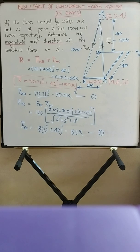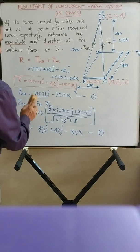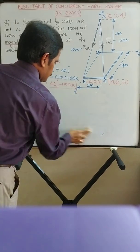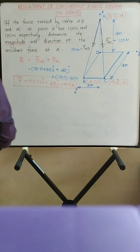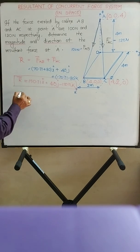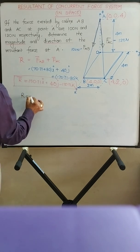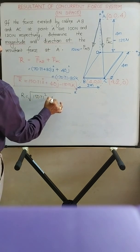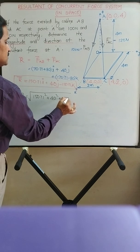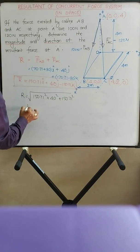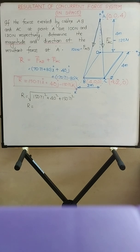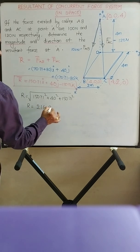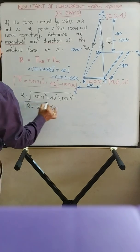Now we have to find out the magnitude and direction of the resultant force. The magnitude R equals the square root of 150.71² + 40² + 150.71², which gives 216.86 Newton. So 216.86 N is the magnitude of the resultant force.